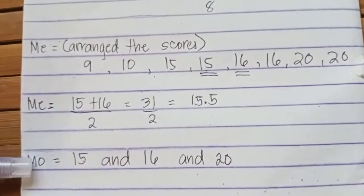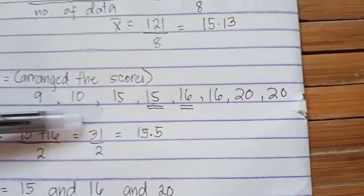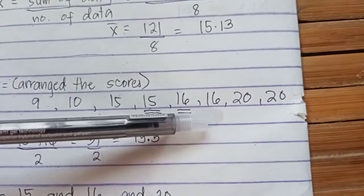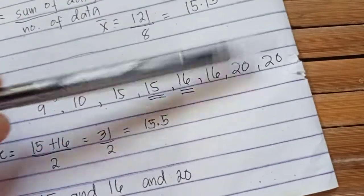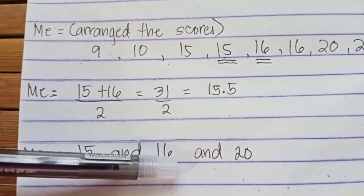Lastly is the mode. This is the most frequently occurring value. In our example, you have 15 appears twice, 16 appears twice, and 20 appears twice. Therefore, the mode will be 15, 16, and 20.